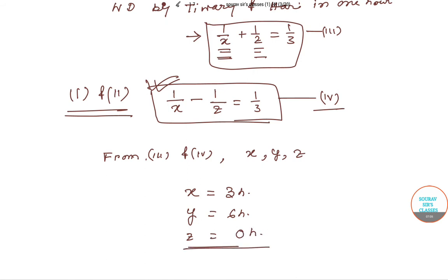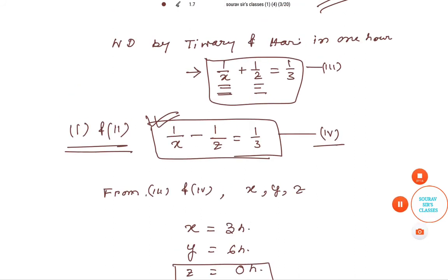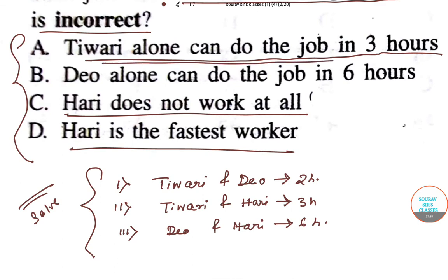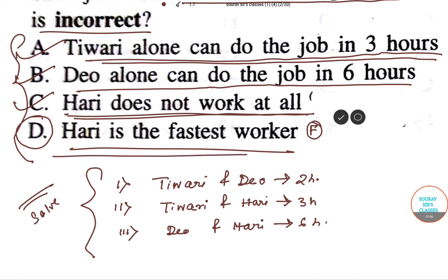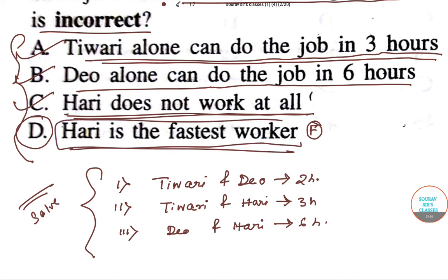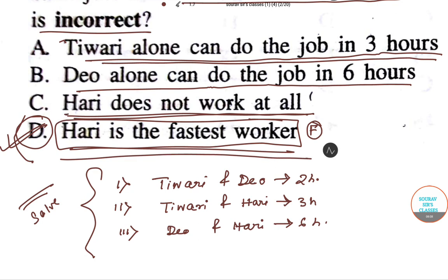Z equals zero means Hari hasn't done any work alone. Going back to the statements: Tiwari alone takes 3 hours — correct. Dio alone takes 6 hours — correct. Hari does not work at all — correct. So the incorrect statement is D: Hari is the fastest worker. That is our answer.